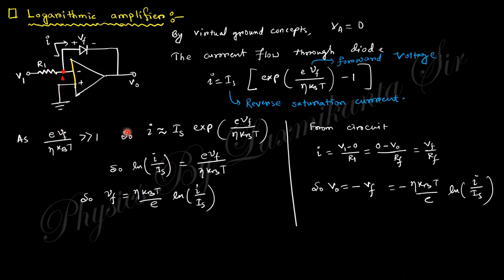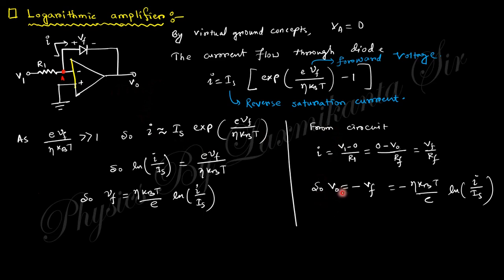For the logarithmic amplifier, a diode is placed in the feedback path. The diode current follows I = Is × exp(Vf / kT), where Is is reverse saturation current and kT is the thermal voltage constant. Since the exponential term is much greater than one, taking the logarithm of both sides gives Vf = (kT) × ln(I/Is). Since Vf equals −Vo, the output voltage is proportional to the logarithm of the input — hence called the logarithmic amplifier.